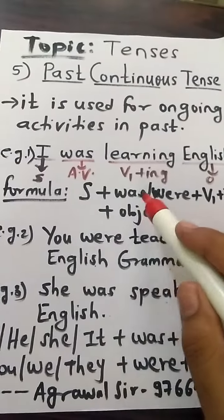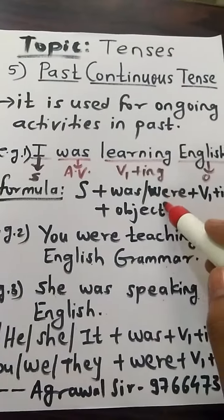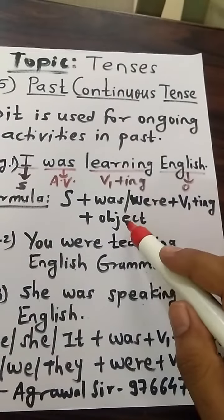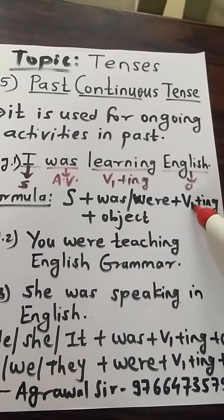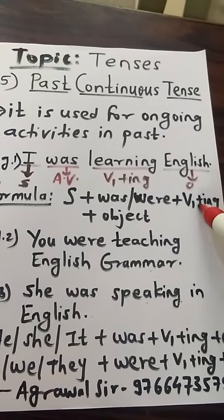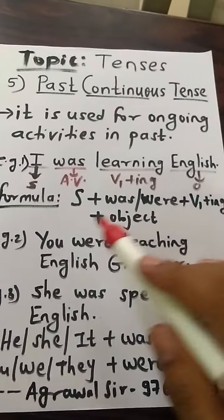The formula is: Subject plus was or were plus V4 plus object. Here V4 is present participle, i.e. V1 plus ing.